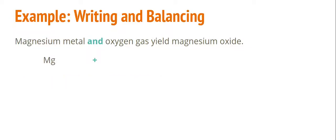Next, we see the word and. Anytime you see a word that says and or with or combines, that's going to be the mathematical symbol equivalent for a plus sign.